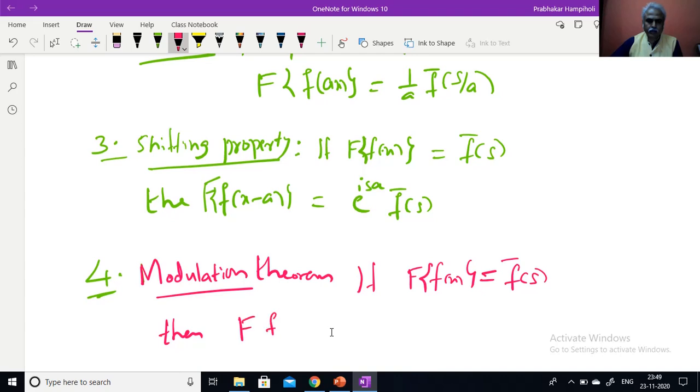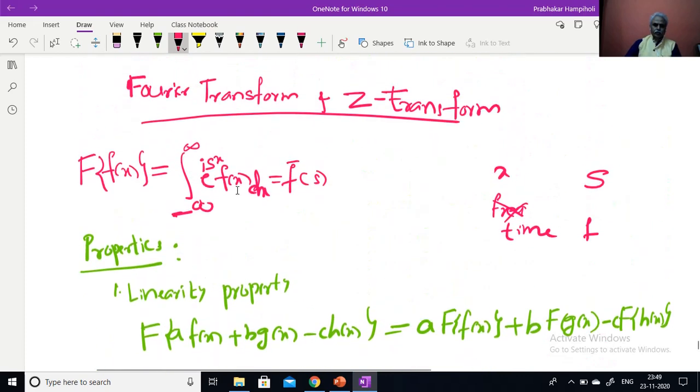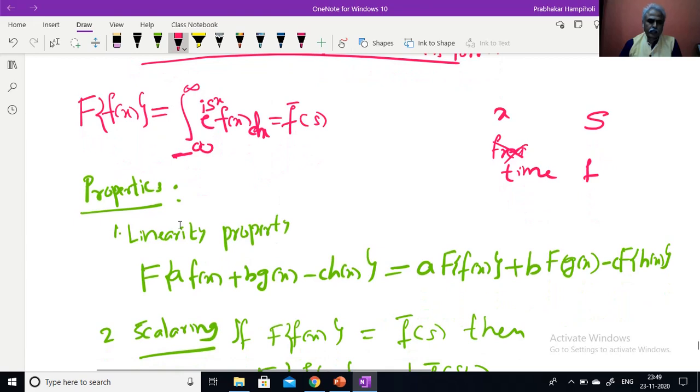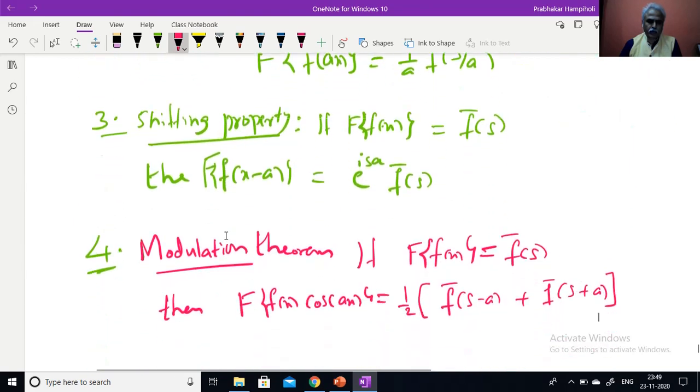Fourier Transform of Fourier Transform of a function which is F̄(s) - we are directly entering into properties, after lecture number 2, 3, 4, 5, 6, please come back to this once again. We will appreciate all this. Then Fourier Transform of this function multiplied by cos(ax) will be average of these two functions. This is a very well-known property of Fourier Transform, modulation theorem.